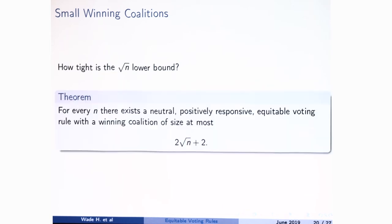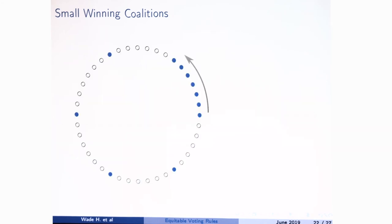The question is how tight this bound is. The audience already told us that the grid rule gives close to √n, and in fact this construction gives two√n + 2 — basically √n. This is our first technical contribution.